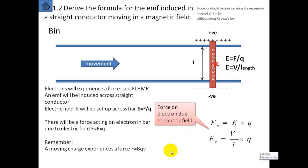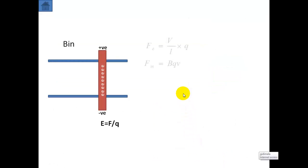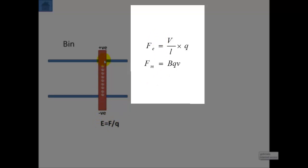Also remember from the previous class on fields and forces: when a charge moves in a magnetic field it will experience a force which depends on the magnetic field strength, the charge, and the velocity. So there will be another force acting on this electron, which is BQV. There are two forces acting on this electron: one is the fact that it's moving in a magnetic field, which will force it downwards; and once this potential difference is set up, there will be a force pushing the electrons upwards. The force due to the electric field pushes it upward; the force due to movement in the magnetic field pushes it downward — two forces acting in opposite directions.